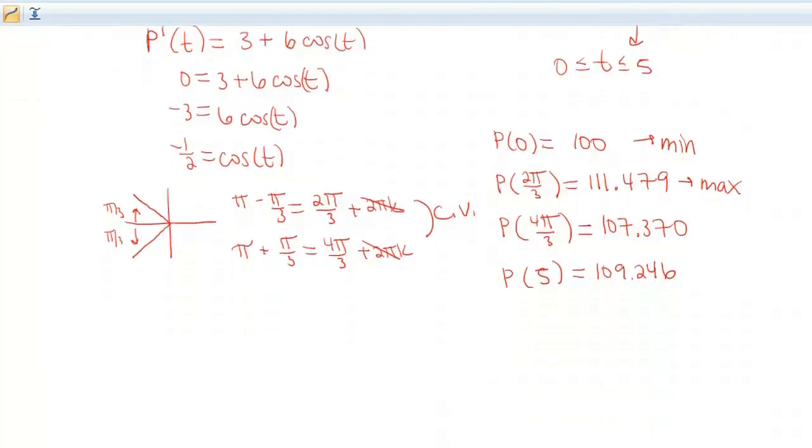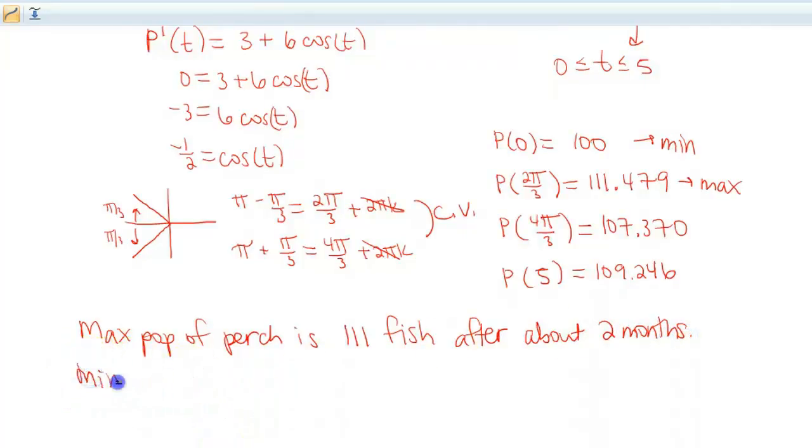So then we can answer this question in a sentence. Let me go down here then. So the max population of perch is 111. Oh, we can't have 0.4 of a fish, so let's just call that 111 fish after... Now 2π/3, when you figure that out, this is about 2 months. And then the minimum population of perch is 100 fish. And I guess we can put the word about in this one too, because that was an approximation. Is 100 fish after 0 months.